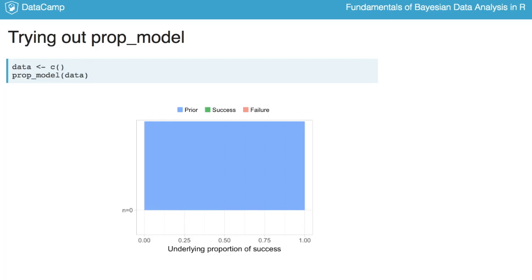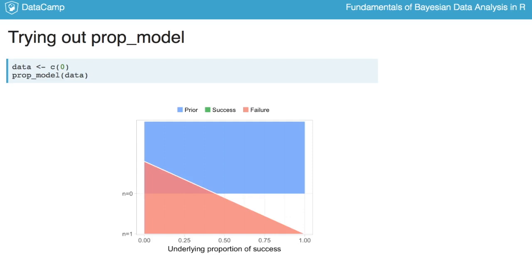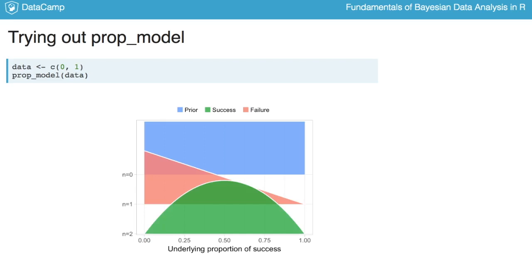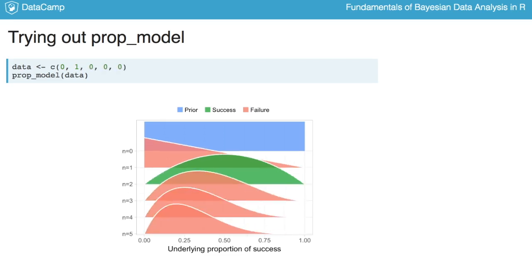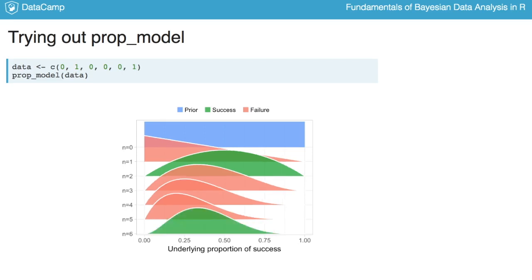Now let's add a data point from an experiment on whether patients got cured by a new drug. Unfortunately, the first patient didn't get cured — marked red for failure. The model now knows that a high proportion of success is improbable, because if it were high, we should have cured this first patient too. The second patient got cured, so now the model knows the proportion of success is improbable to be close to zero or close to one. The next three patients didn't get cured, and for each failure it becomes more probable that the underlying proportion of success is low. After a final cured patient and six data points total, the underlying proportion of success is probably around 0.4, but with this little data there is large uncertainty — it could be as low as 0.10 or as high as 0.75.